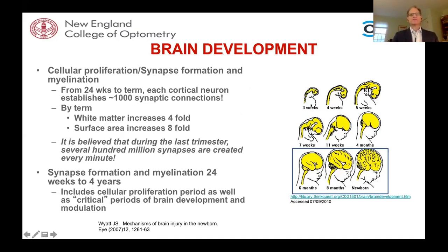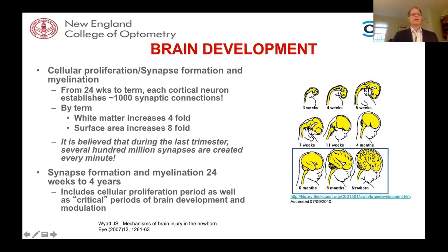Here's the first, second, and third trimester of brain development. Note what the brain looks like at the beginning of the third trimester and as it appears in a newborn. From 24 weeks to term, each cortical neuron establishes an estimated 1,000 synaptic connections. White matter will increase by fourfold and surface area will increase by eightfold. Synapse formation and myelination occurs from 24 weeks through four years of age, including cellular proliferation and critical periods of brain development and modulation.